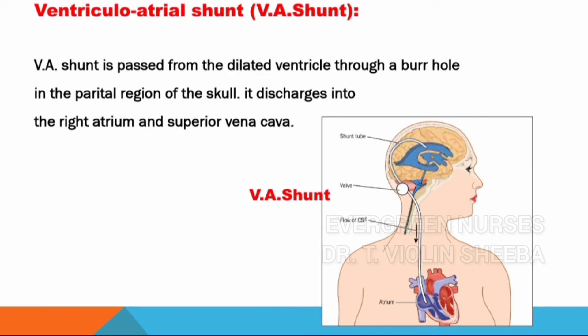The VA shunt — ventriculoatrial shunt — is passed from the dilated ventricle and discharges the CSF fluid into the right atrium and the superior vena cava, from where it is absorbed into the bloodstream.